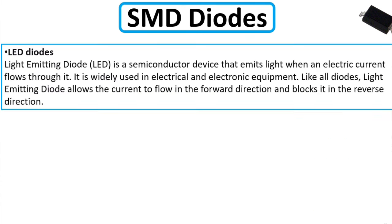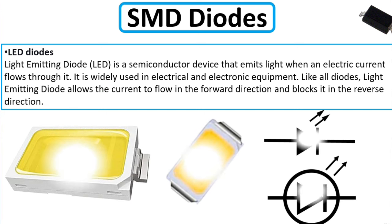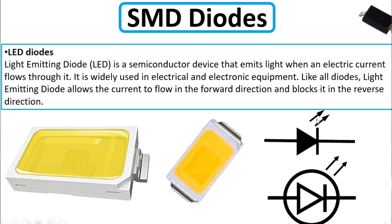A light emitting diode LED is a semiconductor device that emits light when an electric current flows through it. It is widely used in electrical and electronic equipment. Like all diodes, the LED allows current flow in the forward direction and blocks it in the reverse direction. This is the LED diode and this is its symbol.